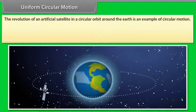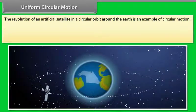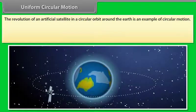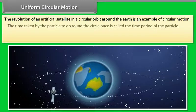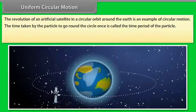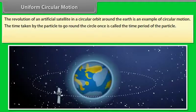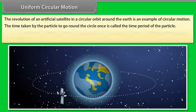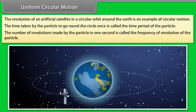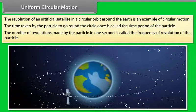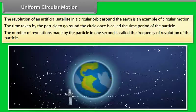Uniform circular motion. The revolution of an artificial satellite in a circular orbit around the earth is an example of circular motion. The time taken by the particle to go round the circle once is called the time period of the particle. The number of revolutions made by the particle in one second is called the frequency of revolution of the particle.